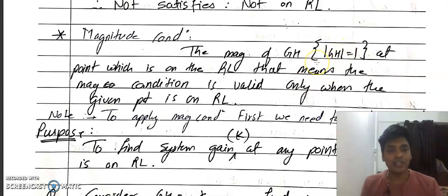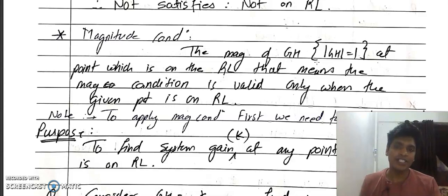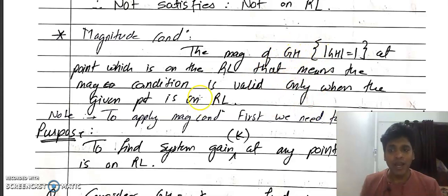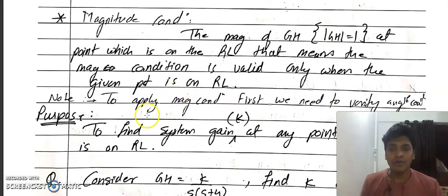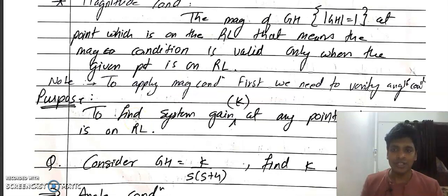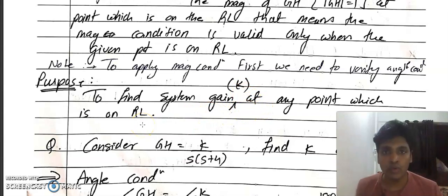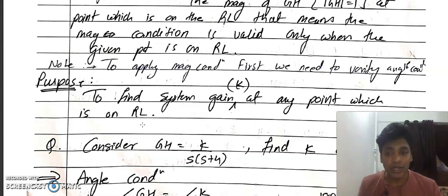The magnitude condition can only be checked when it satisfies the angle condition — meaning whenever the point lies on the root locus, then and only then is there a point in checking the magnitude condition. The magnitude condition is needed to find the system gain K at any point on the root locus.